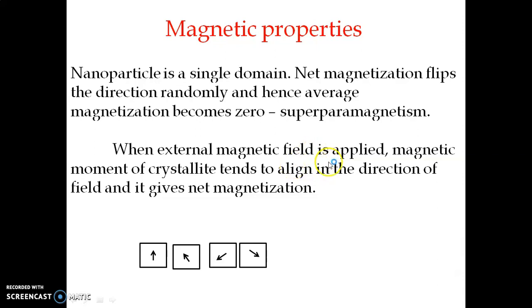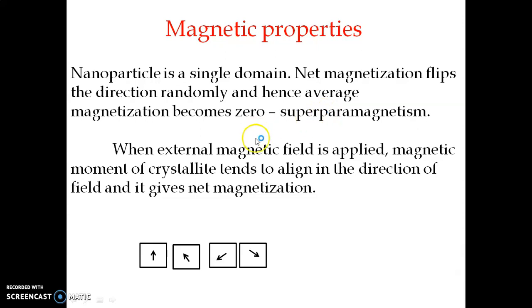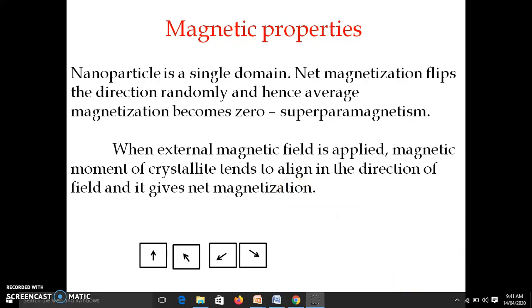When an external magnetic field is applied, the magnetic moment tends to align in the direction of the field. If we apply an external magnetic field in a given direction, that direction will prevail and we get net magnetization. To summarize: superparamagnetism is due to the random flip in direction, so the average magnetization is zero. When we apply an external magnetic field, all the atomic dipoles get aligned in the direction of the field, and therefore we get a net value of magnetization.